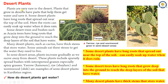Desert plants. Plants are very rare in the desert. Plants that grow in deserts have parts that help them get water and save it. Some desert plants have long roots that spread out near the top of the soil, where the roots can easily soak up water when it does rain. Some desert trees and bushes, such as acacia trees, have long roots that grow deep into the ground to reach the deep layers of soil that have water. Many desert plants, such as cactus, have thick stems that store water. Some animals eat these stems to get the water they need to live. In semi-desert areas, plants increase gradually as we move away from desert. These plants include sparsely spread bushes with interspersed grasses, especially spiny grasses. Yarrow, kaisum, rye, shaylam, and wormwood are examples of semi-desert plants in Kurdistan region.